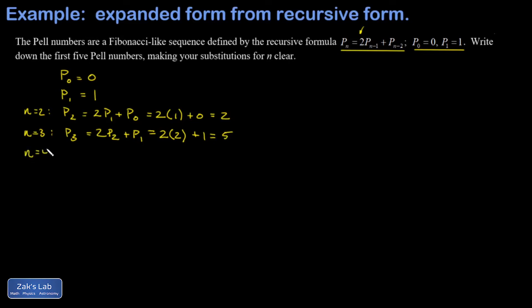I'll just go ahead and throw in a bonus Pell number. Plug in n equals 5, we get twice P_4 plus P_3, and we get 29. This will go on forever.